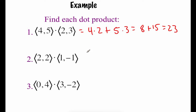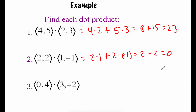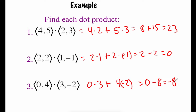For the next example, we've got the vector (2, 2) and the vector (1, -1). Taking 2 times 1 plus 2 times -1: 2 times 1 is 2, and 2 times -1 is -2, so we get 0 as the dot product. Last one, the vector (0, 4) dotted with (3, -2): 0 times 3 plus 4 times -2 gives us 0 plus -8, so we get -8 as our dot product answer.